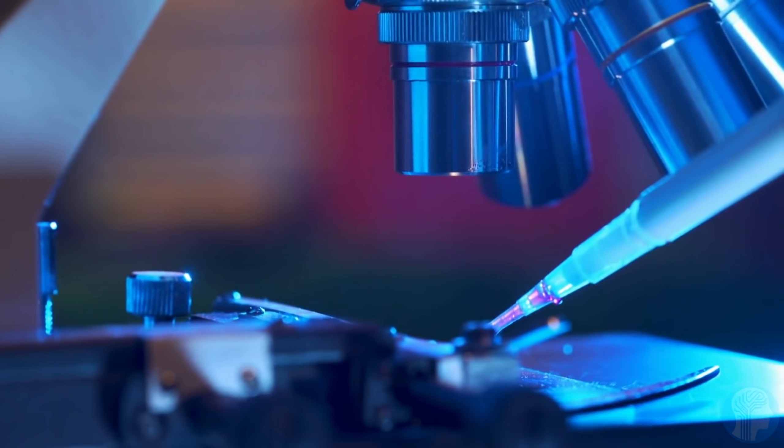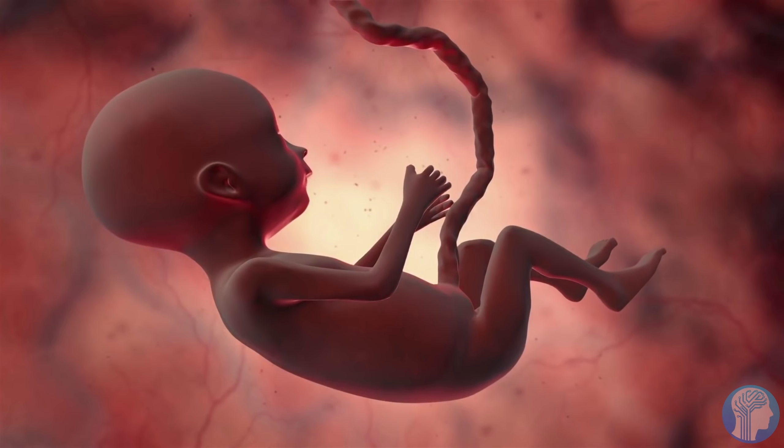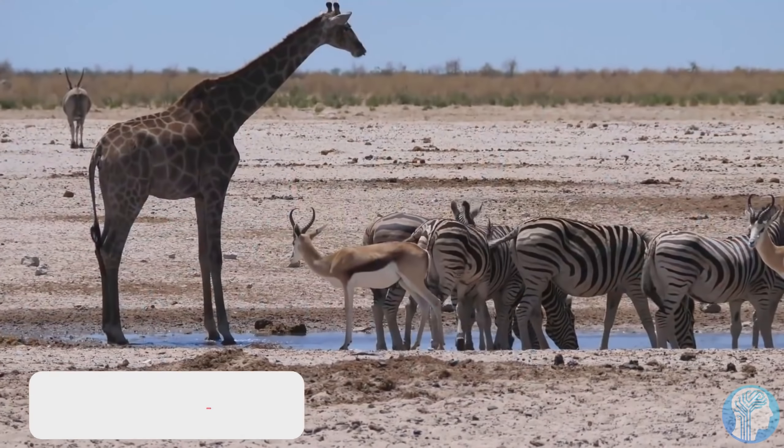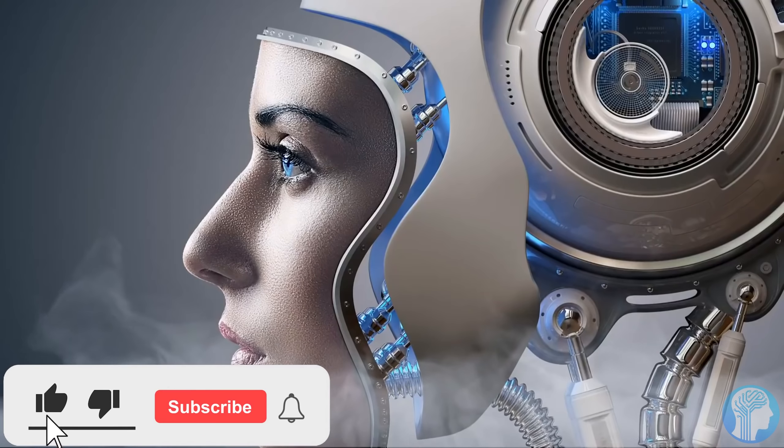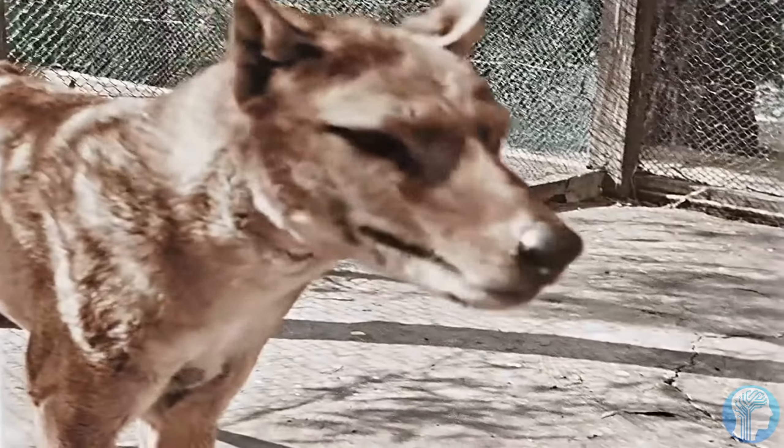They accomplished it by creating a chromosome-length 3D genomic map of one of the thylacine's closest living cousins, the Numbat. Although it previously ranged throughout southern Australia, the striped, termite-eating Numbat is Western Australia's faunal symbol, and it currently only inhabits isolated areas of that state.